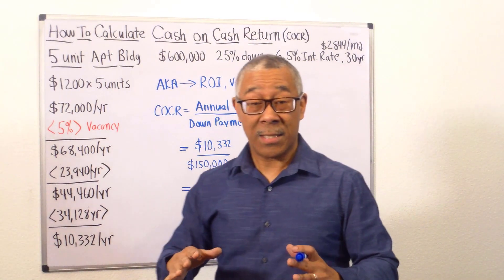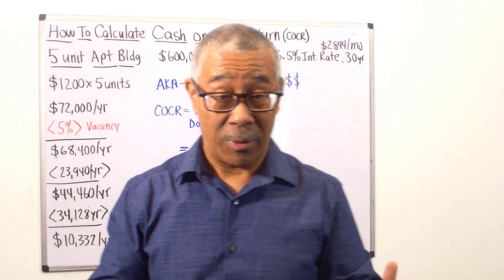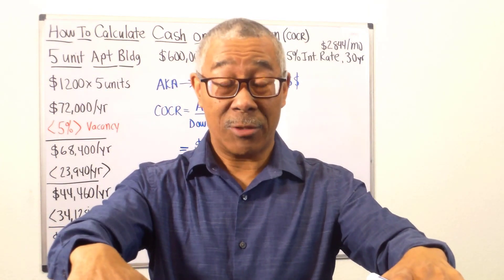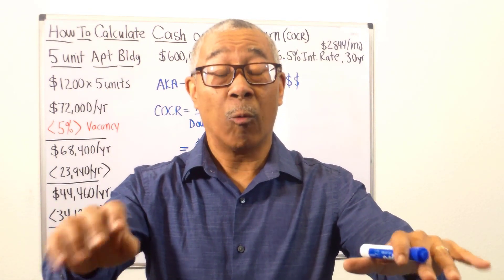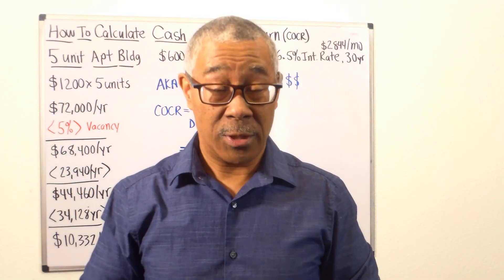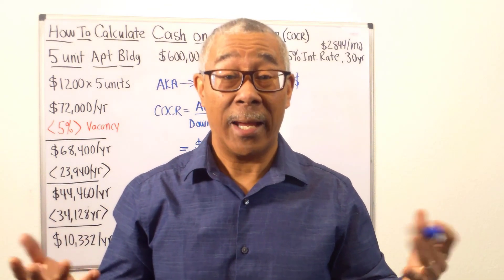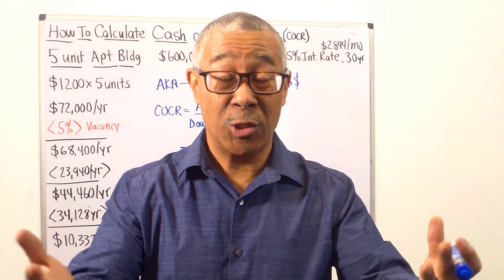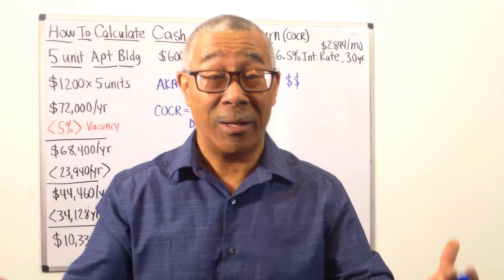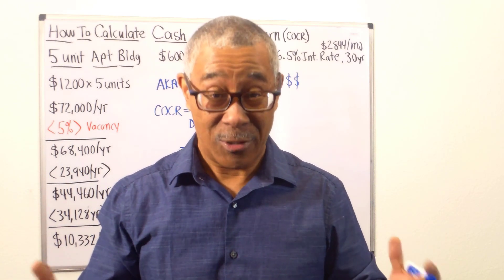What that means is how fast is the money that you put out coming back to you. For example, if you were to put in $150,000 into your investment and in one year your cash flow came back at $150,000, that equals 100% cash on cash return or 100% ROI. If it takes two years to recoup your investment, that's a 50% cash on cash return. If it takes four years to return your investment, that's a 25% cash on cash return.